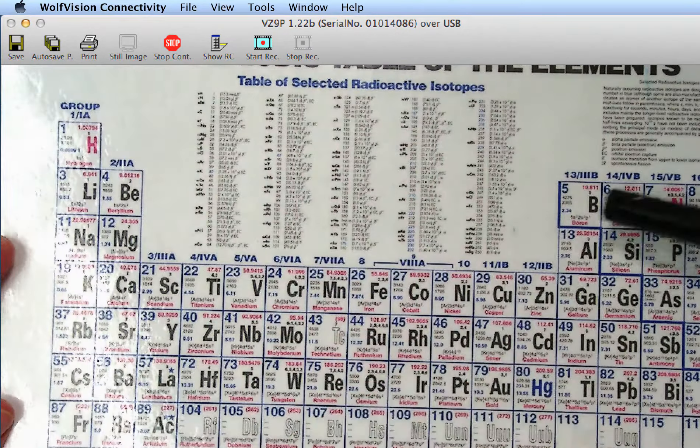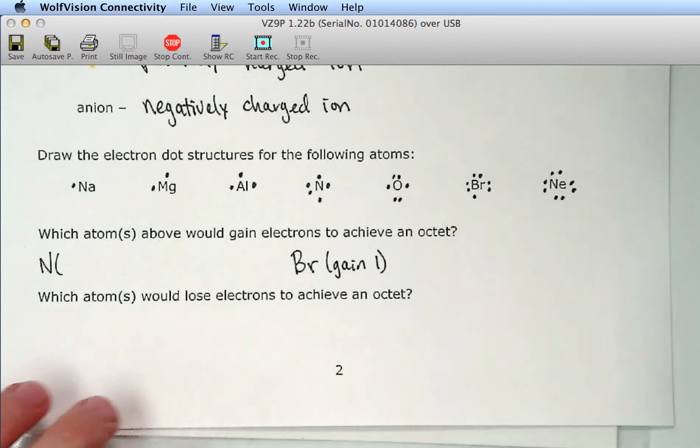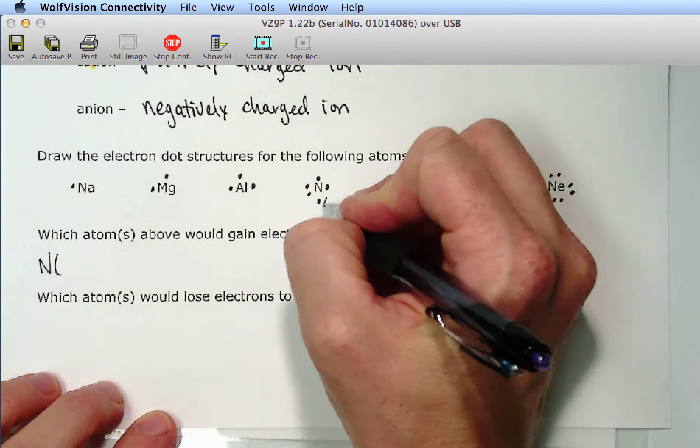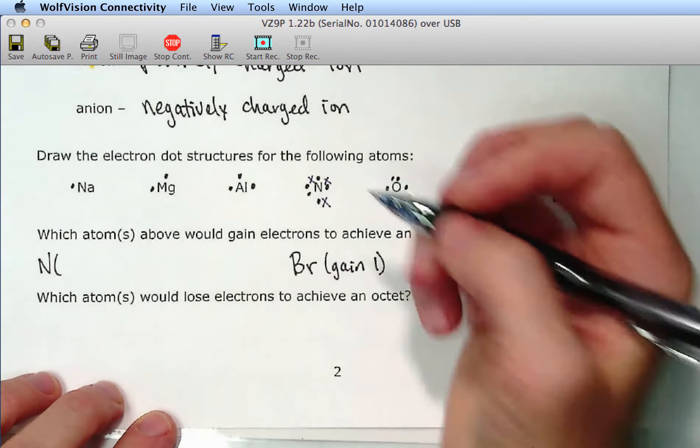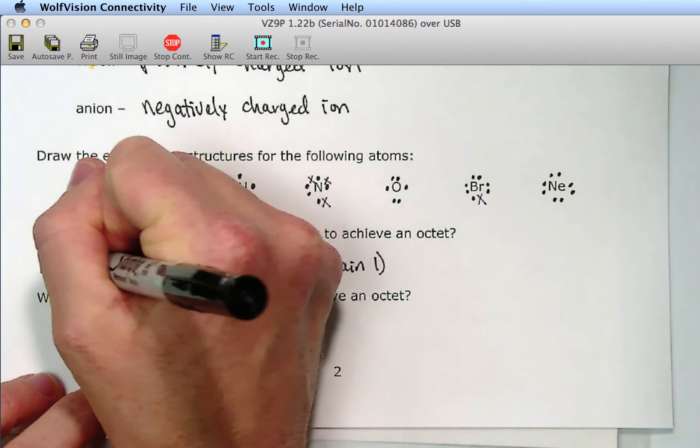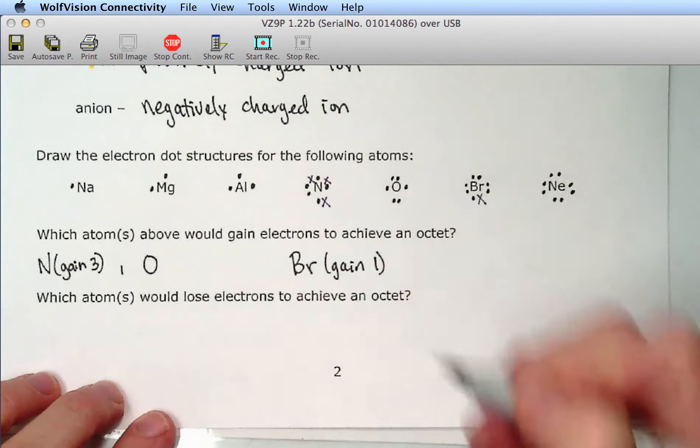So in the example above, neon, would neon gain any electrons? No. He's happy. He's just going to be happy with his 8 electrons. He's not going to react. He's very stable. Bromine. Yeah. Bromine needs to gain one. So bromine is going to gain one. Who else will gain? Nitrogen and oxygen. So nitrogen is going to gain three. So bromine, I'll put in X for the ones that it will just get a one. Nitrogen would have to gain one, two, three. So nitrogen would gain three. Oxygen would gain two.